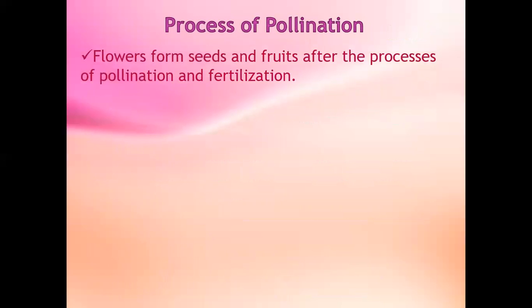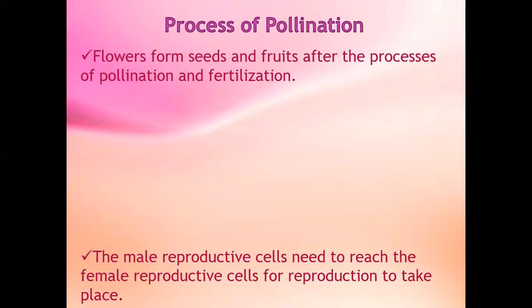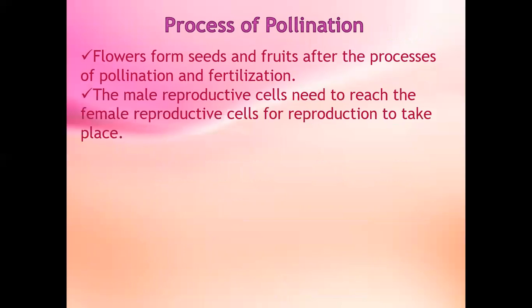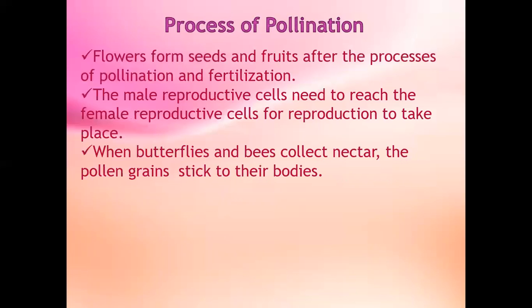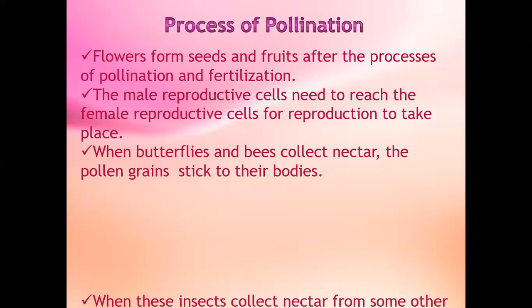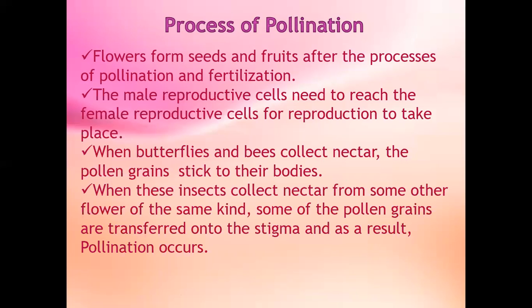Flowers form seeds and fruits after the process of pollination and fertilization. The male reproductive cells need to reach the female reproductive cells for reproduction to take place. When butterflies and bees collect nectar, the pollen grains stick to their bodies. When they collect nectar from another flower of the same kind, some of the pollen grains are transferred onto the stigma, and as a result pollination occurs.